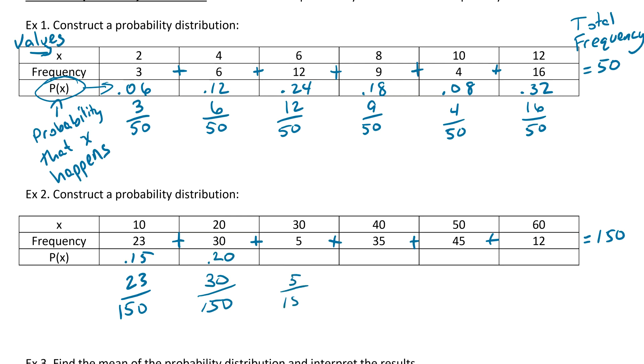For the second one, it would be 30 out of 150, which we get as 0.20. Then 5 out of 150 would be 0.03, 35 out of 150 would be 0.23, 45 out of 150 we get as 0.30, and 12 out of 150 would be 0.08.